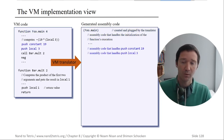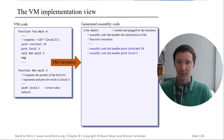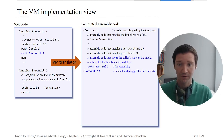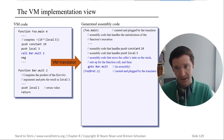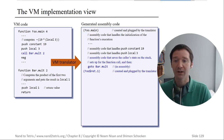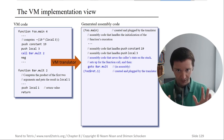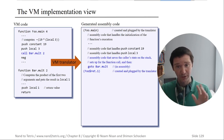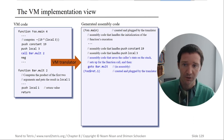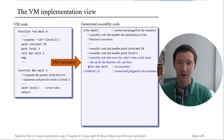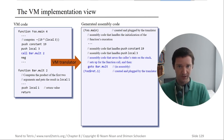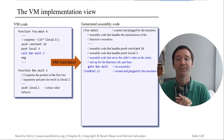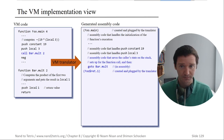Next we handle the VM commands: push constant 19 and push local 3 — you already have that done from project 7, nothing new there. Now we're going to call the function named bar.mult. To do that we need to save the caller's state on the stack — saving the stack frame, saving the return address we want to go to, saving all the segment pointers: local, argument, this, that, etc. Then we jump to bar.mult.